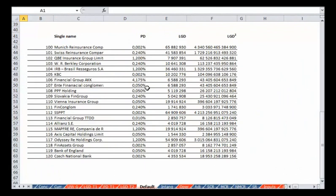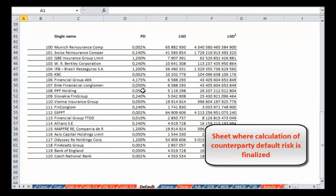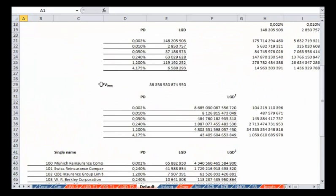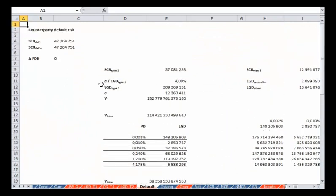Similarly, the completion of the counterparty default risk starts with the probability of default and the loss given default for single names, and continues through a set of successive calculations to produce the final SCR.